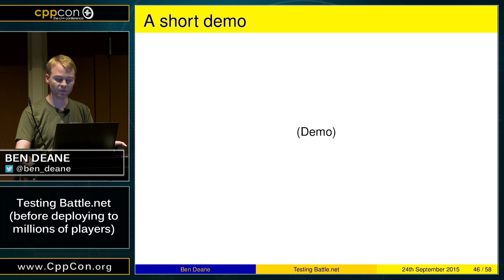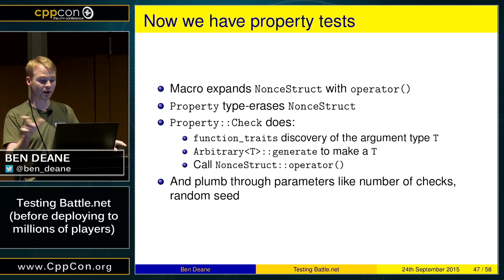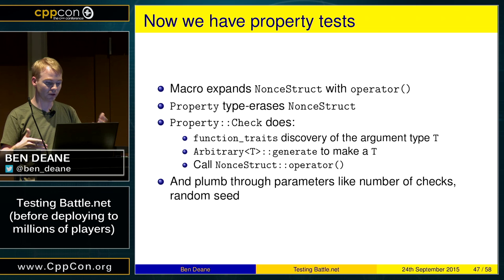To recap: the macro takes its argument and expands to make a nonce struct. Then the property type-erases that and internally does the deduction of the argument type with the function traits. It calls arbitrary<T>::generate to make it, calls the operator(), and the rest is plumbing with the random seed and the number of checks — 100 by default.